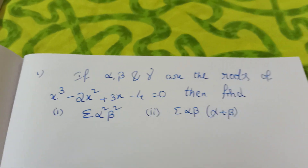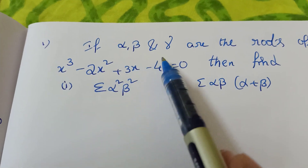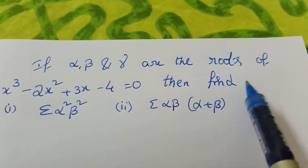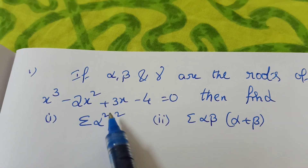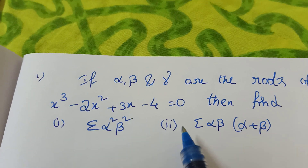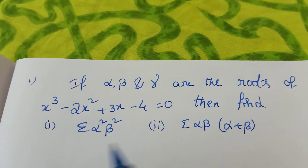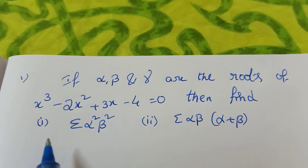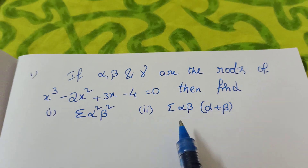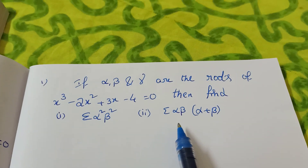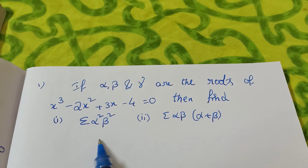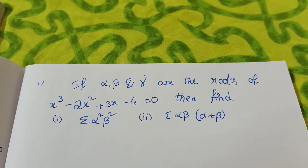Yes, what is the question? See once — if Alpha, Beta and Gamma are the roots of x³ minus 2x² plus 3x minus 4 equal to 0, then find: first one is Σα²β², second one Σαβ(α+β). How to find these values?